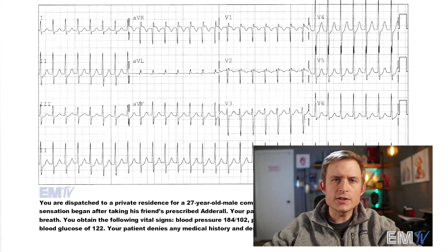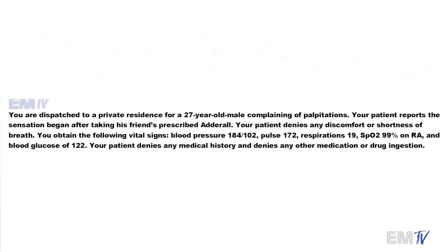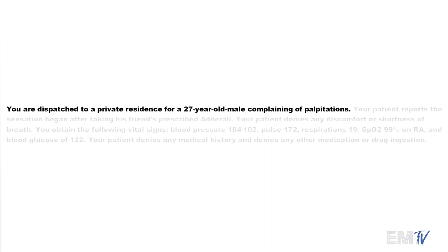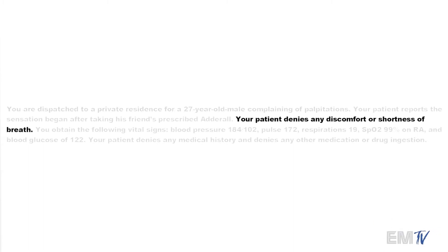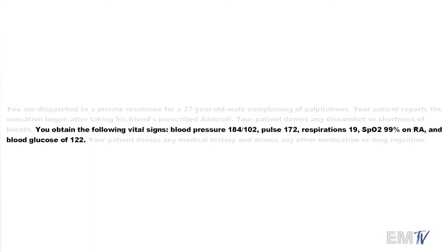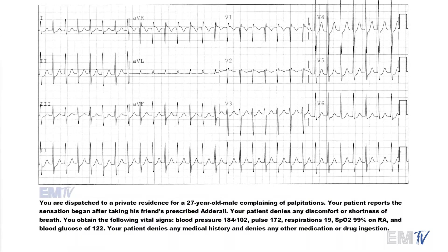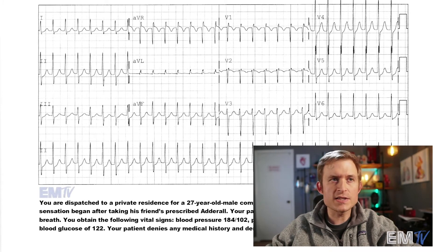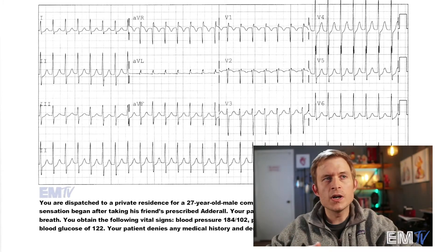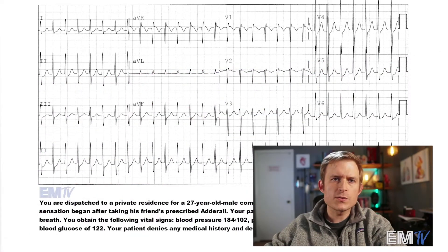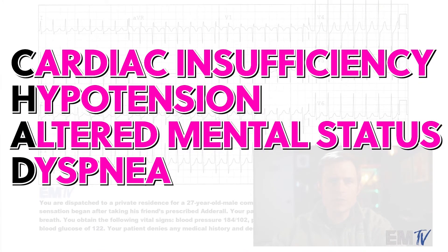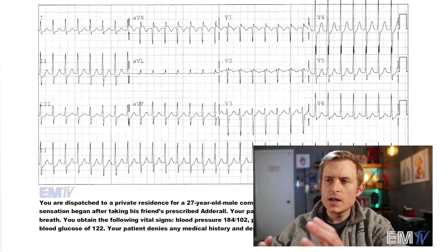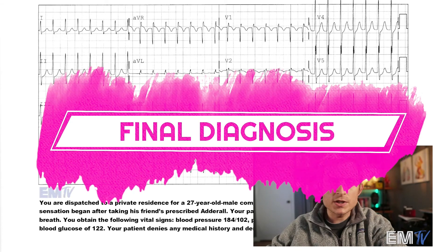We're dispatched to a private residence for a 27-year-old male complaining of palpitations — that feeling of a racing heart. The patient denies any discomfort or shortness of breath. Vital signs: blood pressure 184/102, pulse rate 172, respirations 19, SpO2 99% on room air, blood glucose 122. For stable versus unstable, I use the criteria CHAD: cardiac insufficiency, hypotension, alteration of mental status, and dyspnea. Based on this patient's complaints, physical presentation, and vital signs, he does not meet any CHAD criteria and is therefore stable. My final diagnosis is a stable SVT.